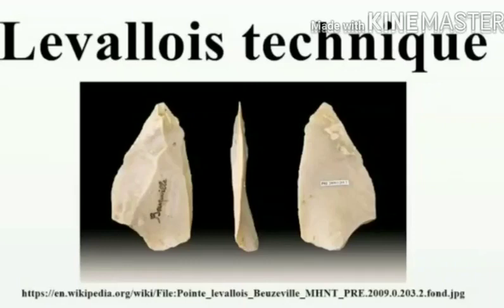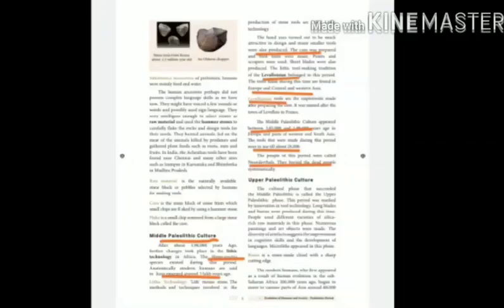Next, we will see about Levallisian. Levallisian refers to one kind of tool — implements made after preparing the core. It was named after the town of Levallois in France. The Middle Paleolithic culture appeared between 3,85,000 and 1,98,000 years ago in Europe and parts of Western and South Asia. The tools made during this period were useful till about 28,000 years ago.